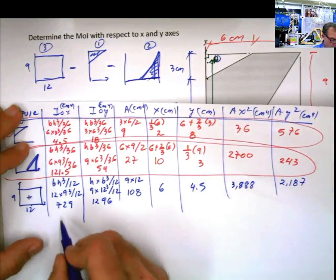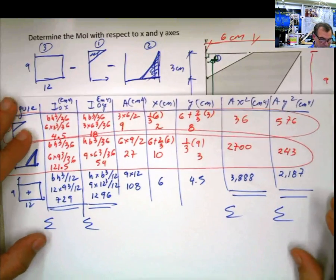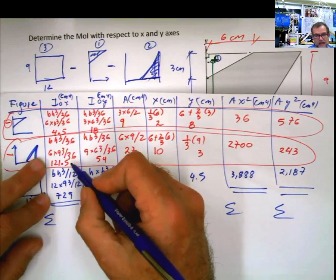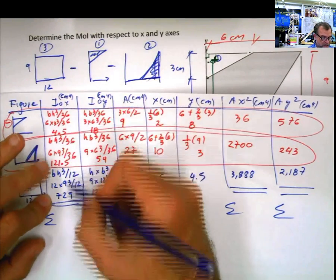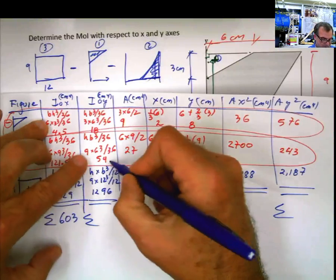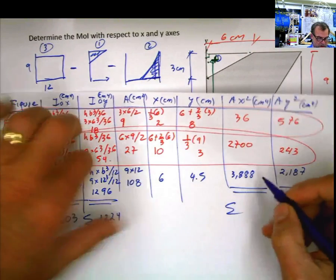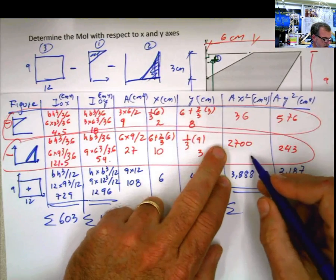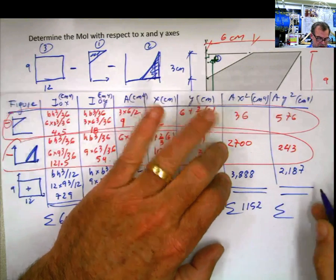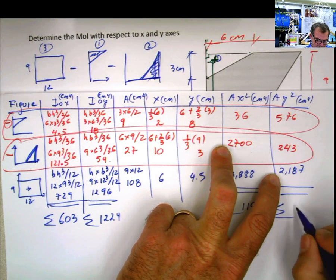What do we do? Summation, summation, summation, summation. Now, when I say summation, remember that it's positive and negative. This is going to be 729 minus, that's why we use a red color, minus. 729 minus 121.5 minus 4.5 is 603. 1296 minus 54 minus 18 is 1224. 3,888 minus 2700 minus 36 is 1152. And 2187 minus 243 minus 576 is 1368.